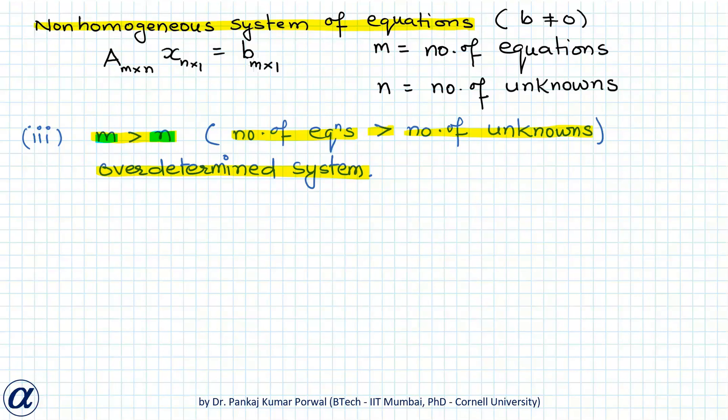If the number of linearly independent equations is less than or equal to the number of unknowns, then the system will be consistent.